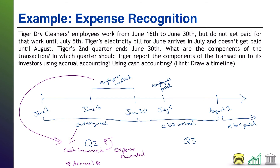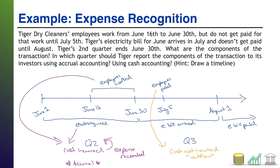Under cash basis accounting, cash is the only thing that matters. The cash outflow for employees occurs on July 5th, and the cash outflow for the electricity bill occurs sometime in August. Both July and August are in Q3. So under cash basis accounting, the expenses are recorded in Q3 — split between July for employee pay and August for the electricity bill.